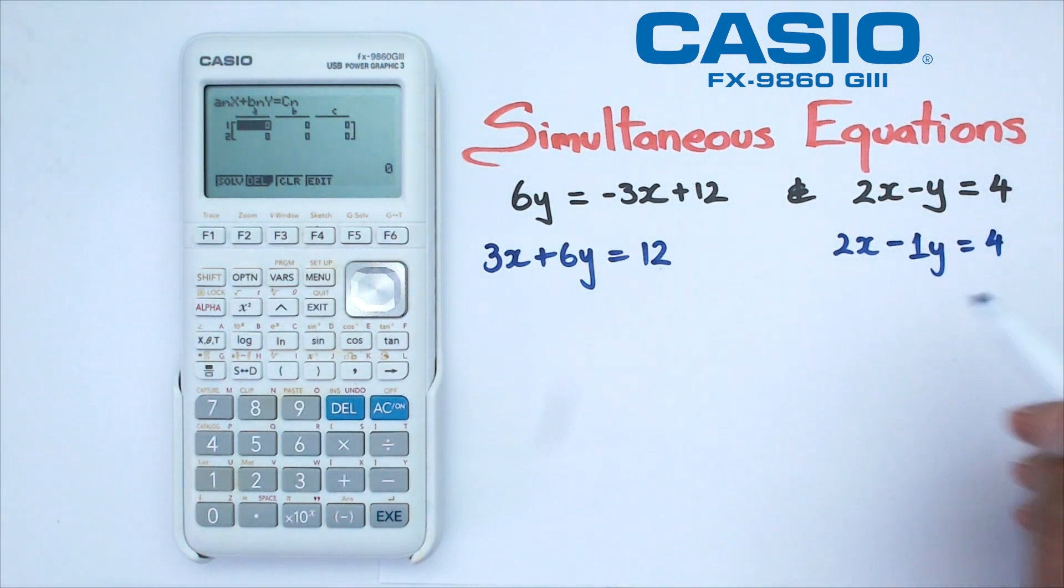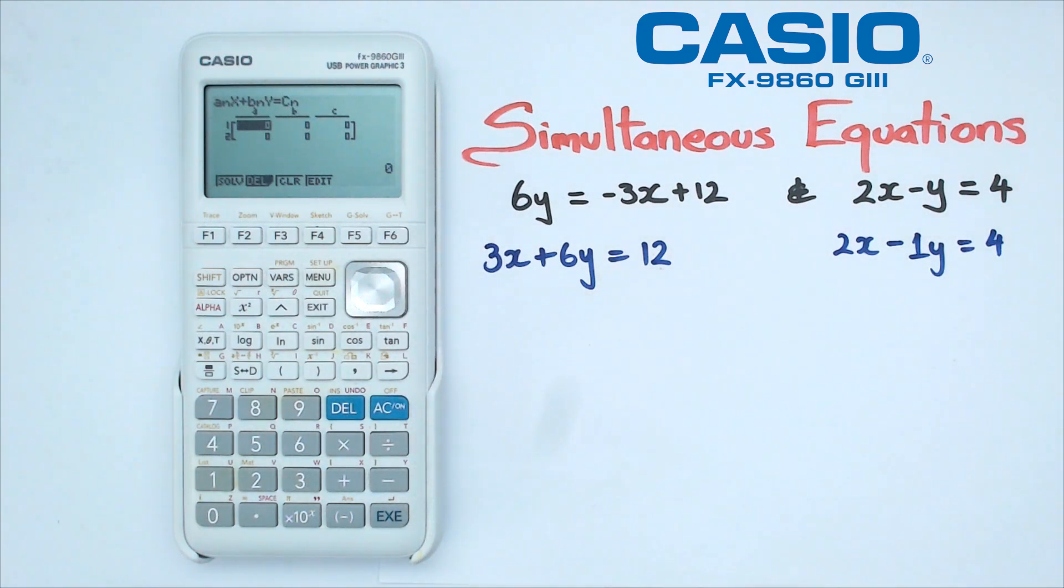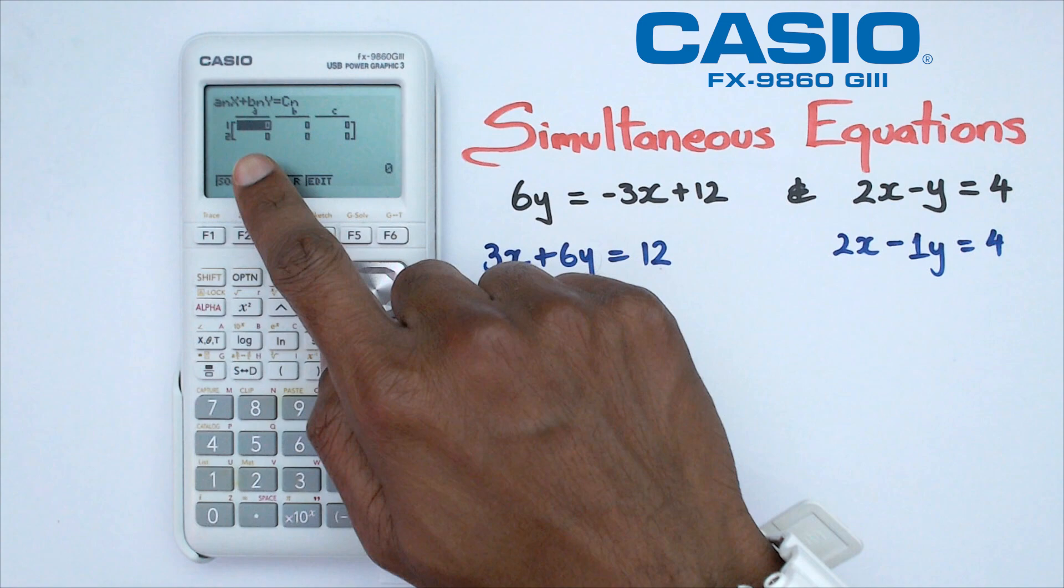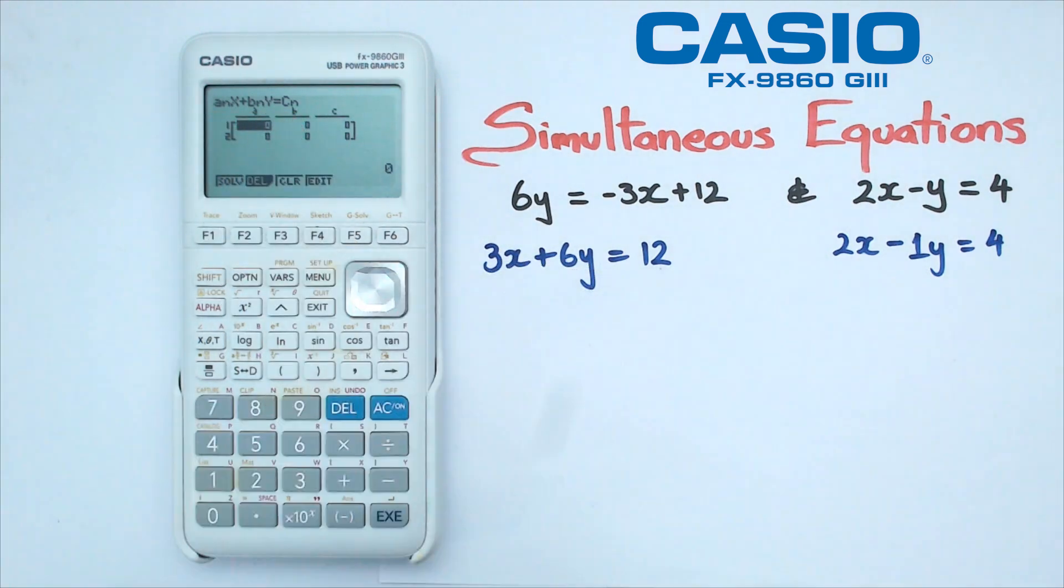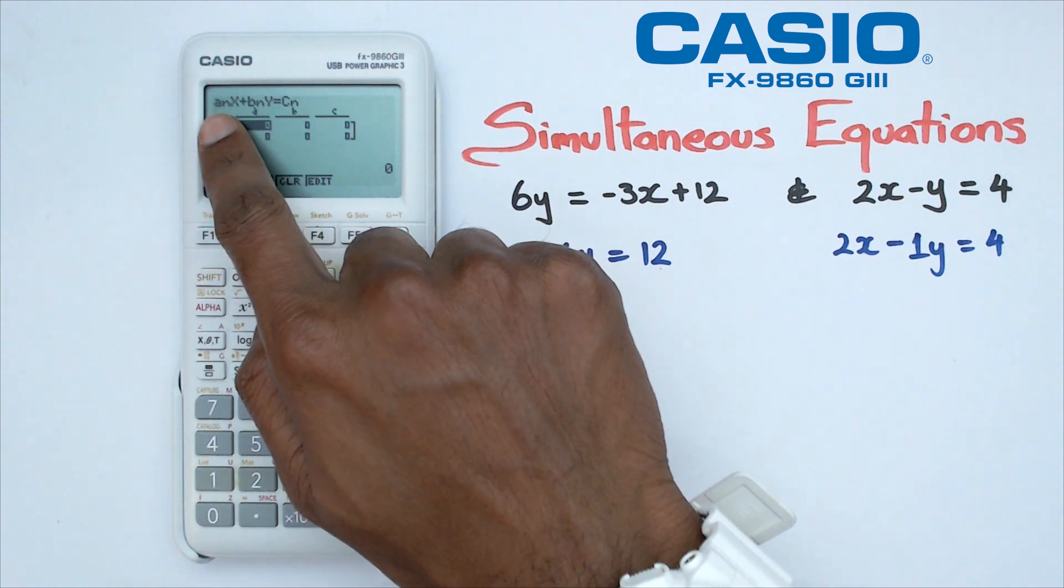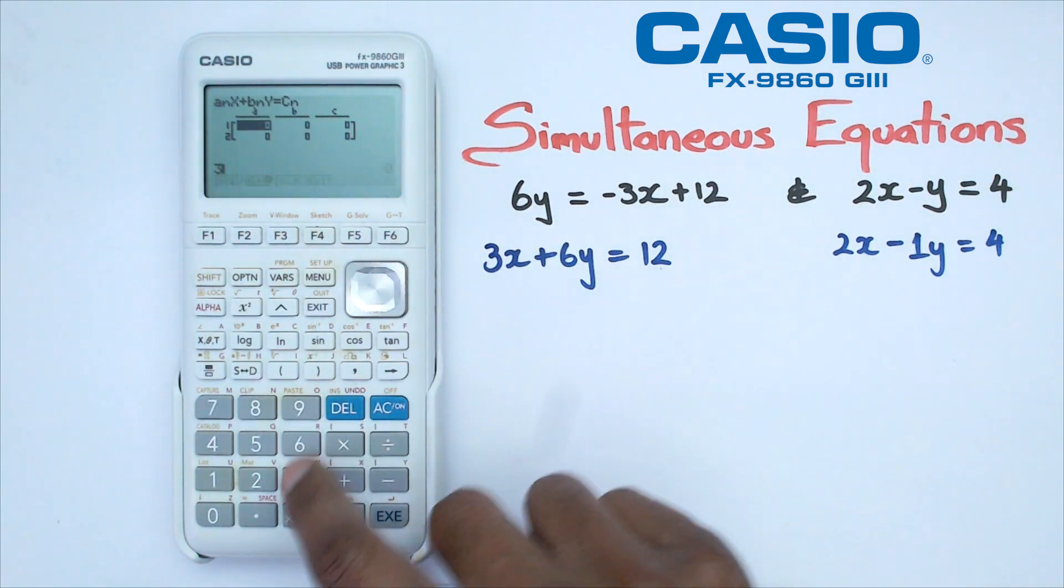And the reason I'm doing this is because when I enter this in the calculator, it just reminds me that there is a 1 there. So what you can see is you've got the AX plus BY plus C.